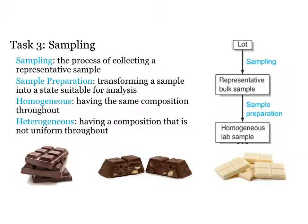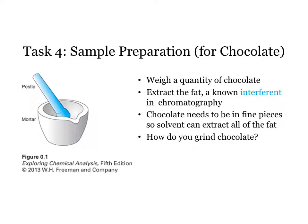Once we have chosen our representative sample, we need to prepare it in a state that is suitable for analysis. Not many instruments allow you to simply insert a solid sample and get a reasonable result. Rather, we have to take a heterogeneous sample composed of many different components and reduce it to a set of samples that is homogeneous. This is where that literature search should begin to pay off. In this example, we rely on the literature to tell us how many grams of chocolate will yield enough caffeine and theobromine to reliably be detected by the method of choice — in this case, a type of chromatography.